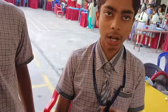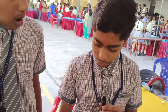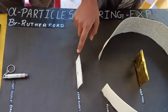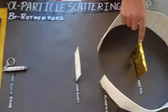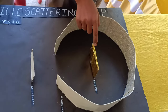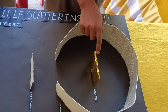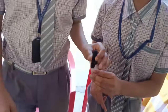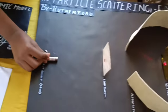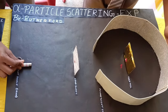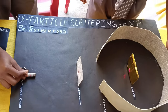A question arises: why use alpha particles instead of any other particles? It is because alpha particles have high energy and are heavier in mass. The thin gold foil sheet contains thousands of atoms in it.